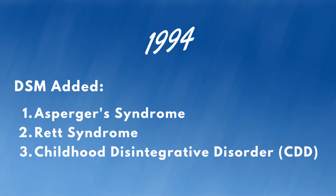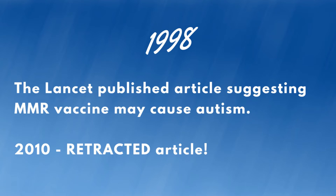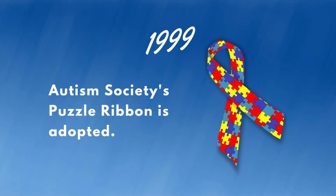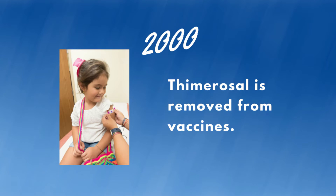In 1998, an article was published in The Lancet suggesting that the MMR vaccine may cause autism. After other studies disproved the theory, the publication retracted the article — I believe not until 2010. In 2000, vaccine manufacturers removed thimerosal, a mercury-based preservative used in vaccines, because the public was still afraid vaccines caused autism. That 1998 Lancet publication's damage is still going on now — today I still hear people telling me that vaccines cause autism, all these years later.